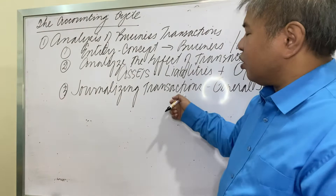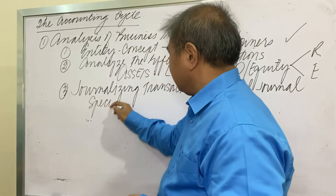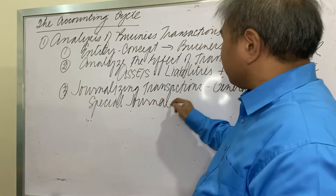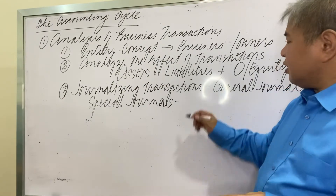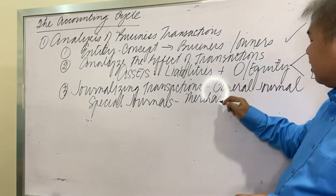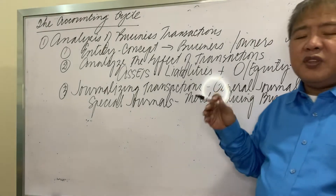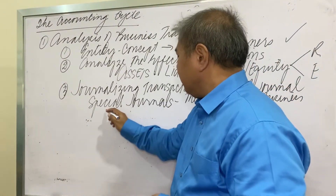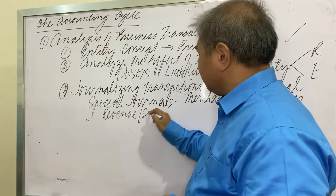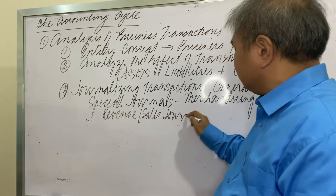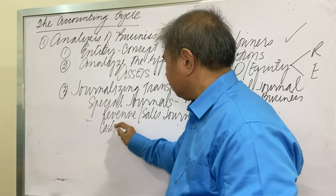Because accounting is an art, different journals have been designed to cater to specific transactions. Besides the general journal, we also have what are called special journals. You may recall using special journals in accounting for a merchandising business. These include the revenue or sales journal, and the cash receipts journal.